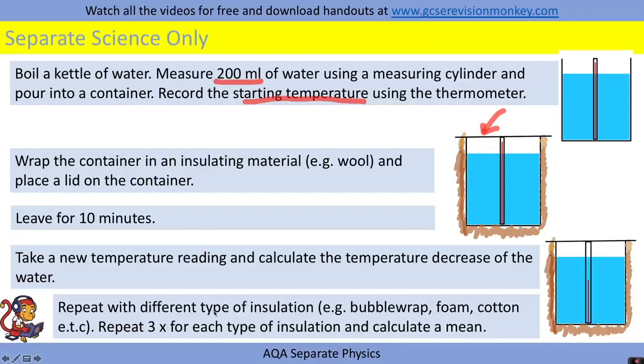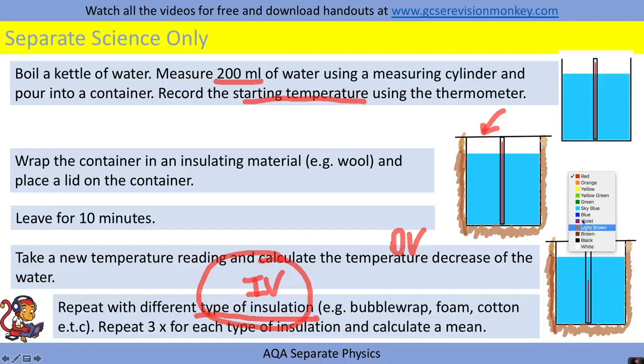For this experiment, the independent variable was the type of insulation and the dependent variable was the temperature decrease or change. In the exam they might ask you to investigate a different independent variable. For example, rather than the type of insulation, they could get you to stick with one type like wool.